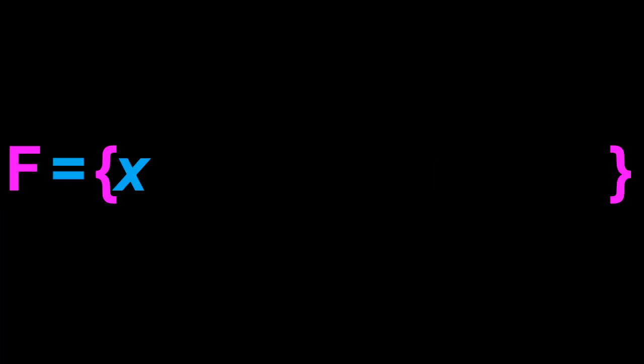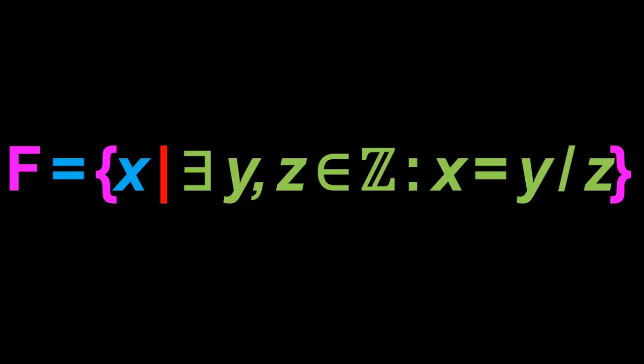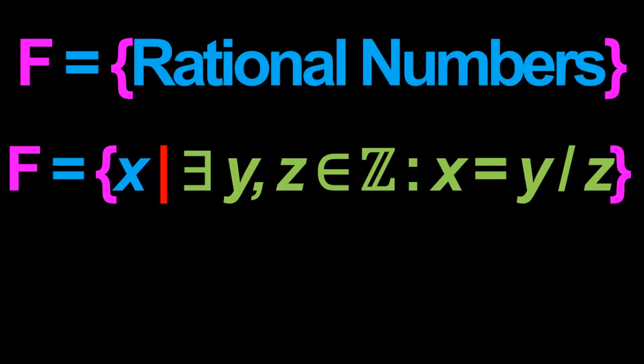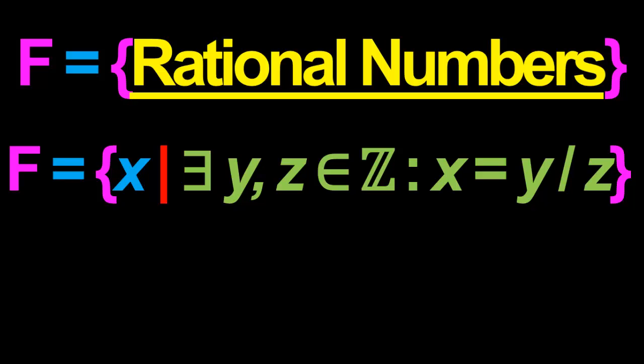Let's try another example. Suppose the set F consists of all the objects x which satisfy the property that there exist integers y and z such that x is equal to y divided by z. It turns out that the set F is really just the set of rational numbers, because F consists of precisely those objects which can be expressed as a ratio of two integers — and that is precisely how rational numbers are defined.